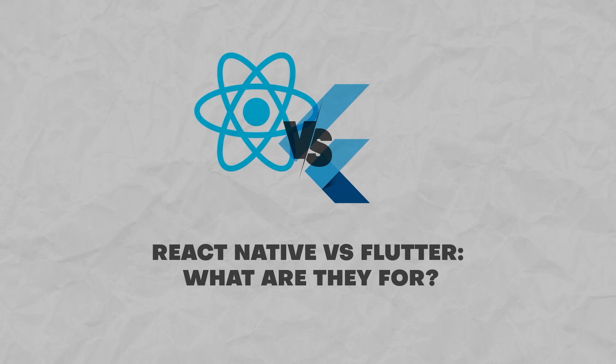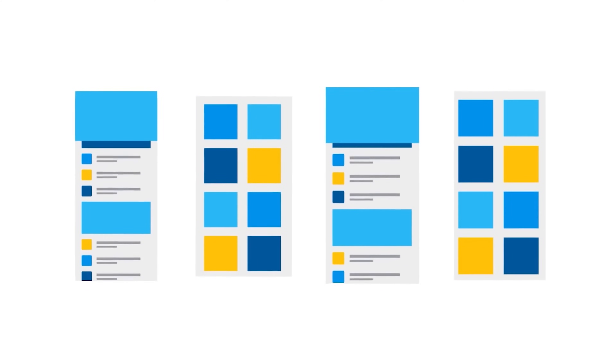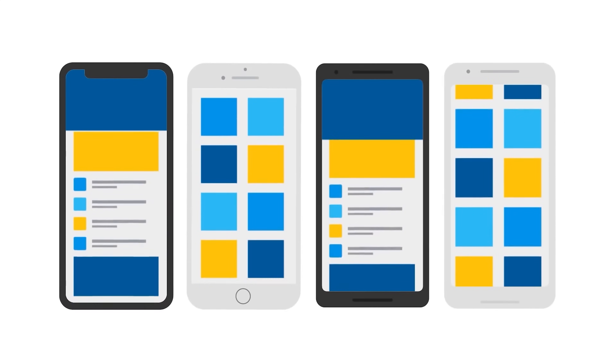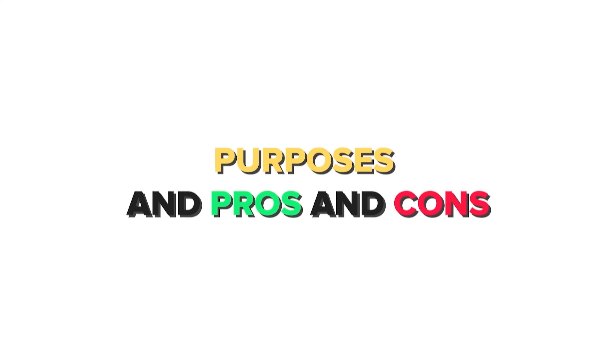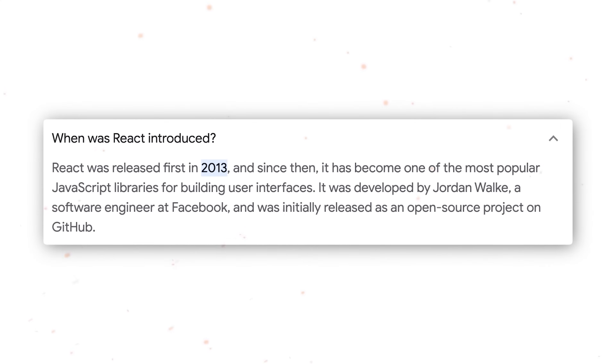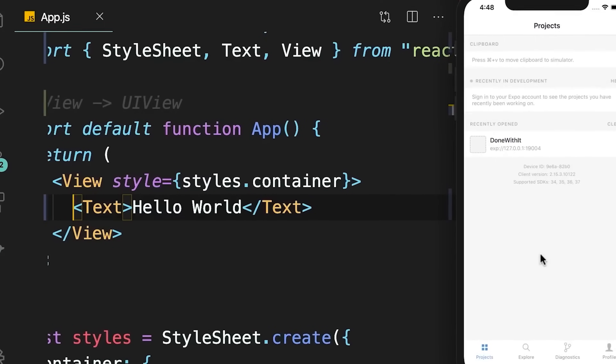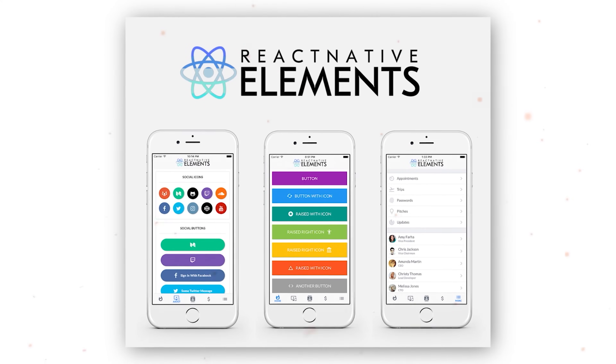React Native vs Flutter — what are they for? Both React Native and Flutter are great cross-platform app development frameworks — in fact, they are the best ones. But they both have their unique purposes as well as pros and cons. React Native is a mobile app development framework introduced in 2013 by Meta. It allows for fast development using JavaScript and offers a clear path to creating hybrid mobile apps, enabling developers to build apps for both platforms using familiar technologies like JSX, React Native components, and JavaScript.